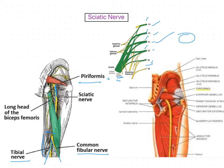Looking at the relations from above downwards, the posterior relations of the sciatic nerve include the piriformis muscle, the gluteus maximus muscle, and the long head of biceps femoris overlapping the nerve from behind.